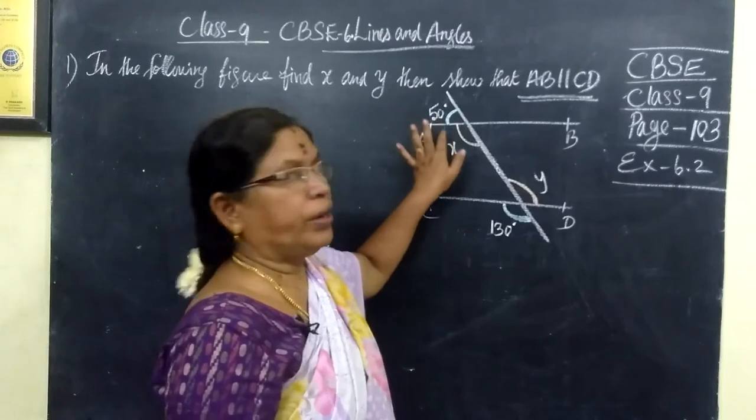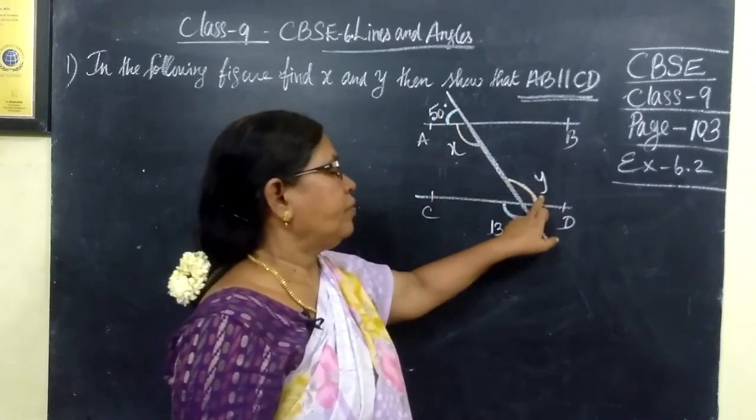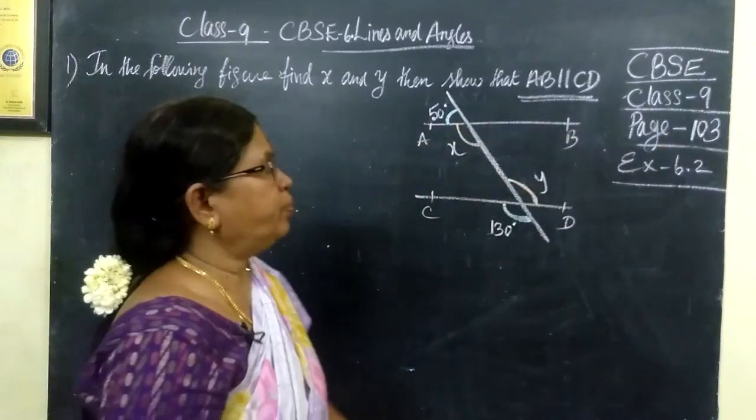In this question, we are given one angle and suppose to find X and Y. If they are equal means by converse AB parallel to CD. That result we are bringing.